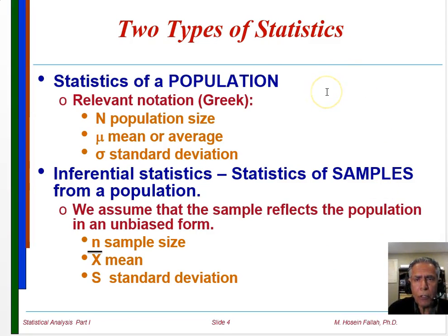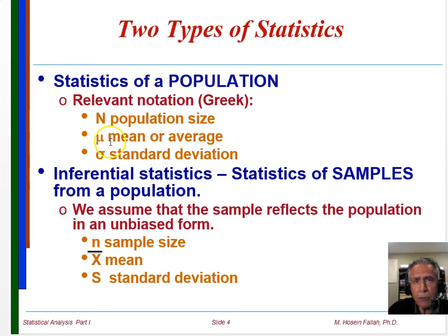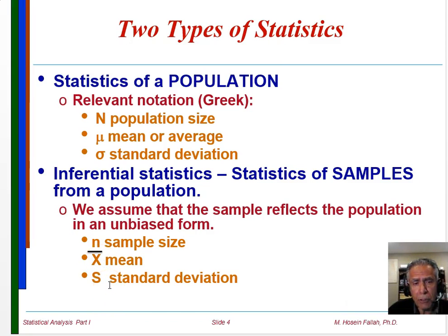There are two types of statistics. If you use the entire population, referred to as statistics of a population, then the size of the population is shown by capital N, its mean by mu, and the standard deviation by sigma. But oftentimes we refer to the population through a sample of data, what we call inferential statistics. In that case, the size of the sample is shown by small n, the mean value by x-bar, and the standard deviation by s.